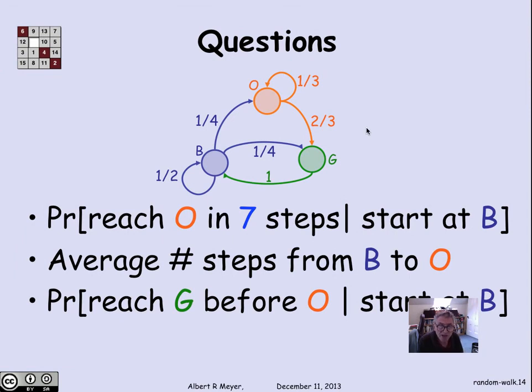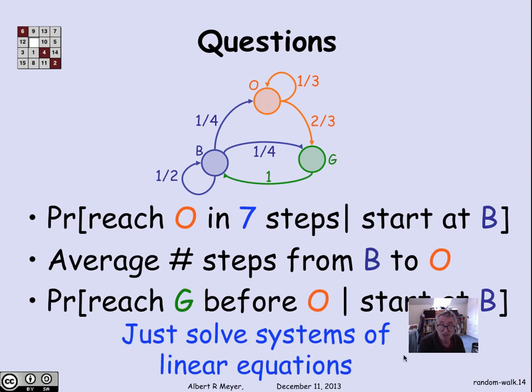So looking back at our questions for random walks, where we ask the probability of reaching O in seven steps starting at B, what's the average number of steps to go from B to O, and what's the probability of reaching G before O starting at B, in every case, these questions can be formulated simply as solving systems of linear equations whose structure directly reflects the structure of the digraph.